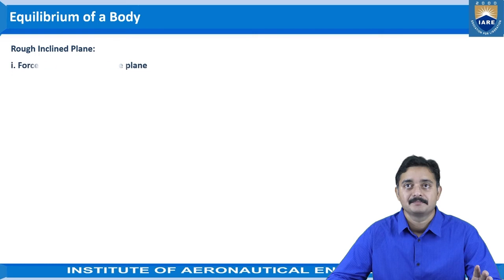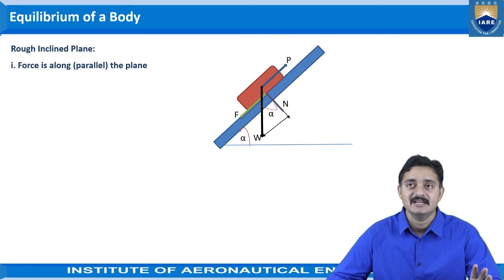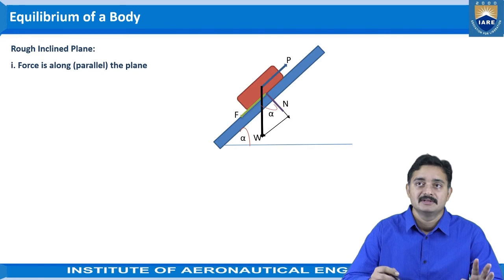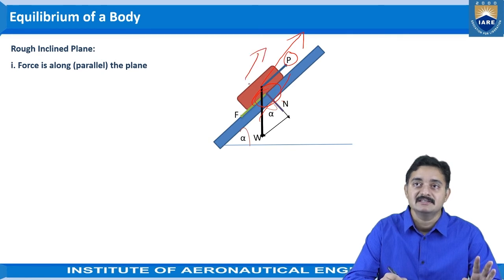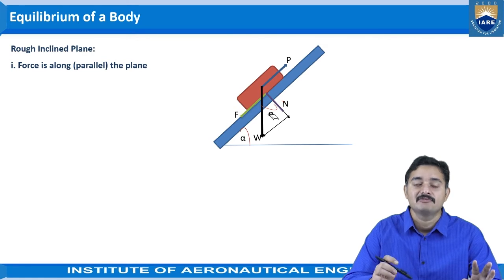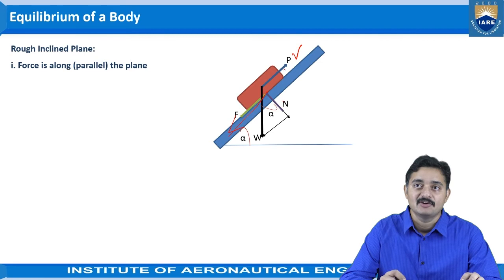Now let us consider the rough inclined plane, with force applied along the plane. Consider a plane inclined at an angle of alpha, shown in blue. As this is a rough plane, friction will prevail. The force P is applied along the plane, so the object will try to move towards the right side; hence the frictional force acts downward along the plane to the left side. The application of force P causes friction to act in the downward direction.